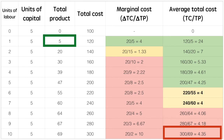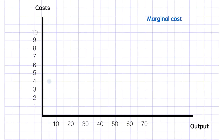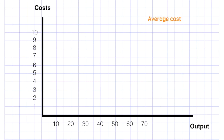Let's visualize this data on a graph. This series of points represents the data we have on marginal cost. You'll see that while initially high, marginal cost drops to its lowest level at about 20 units of production. As output continues, marginal cost starts to rise. As for average cost, we can see that they continue to fall until about 60 units of output.